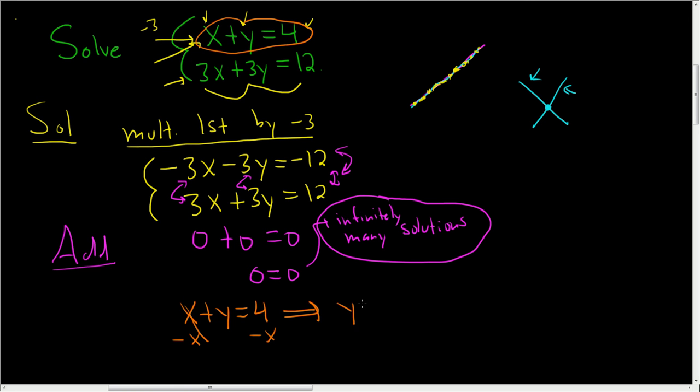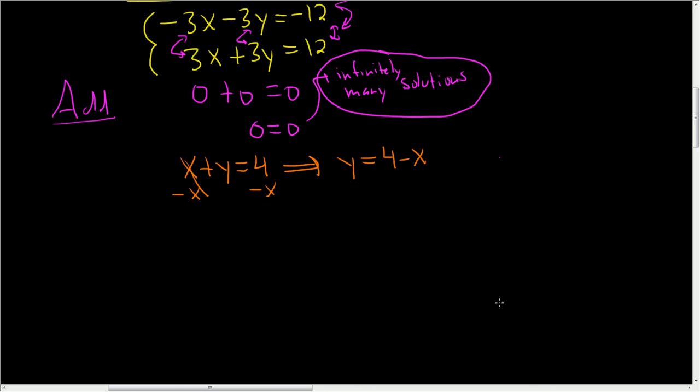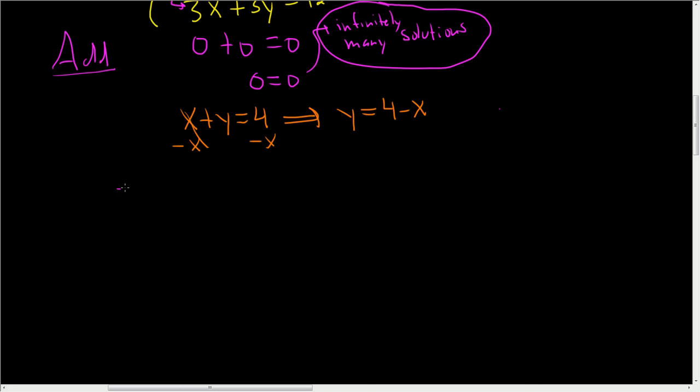Subtract x. When we do that, we get y equals four minus x. And now we somehow have to write down our infinitely many solutions.